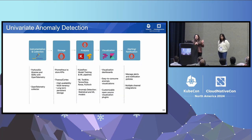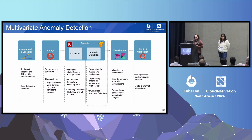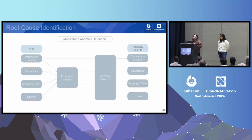Let's come back to that univariate anomaly detection workflow and see how we modify it for multivariate anomaly detection. There's really not much modification needed — you only have to expand the analysis layer to include correlation along with anomaly detection. Correlation helps you understand metric-level relationships, while dependency graphs help you understand service-level relationships.